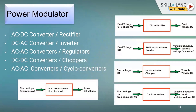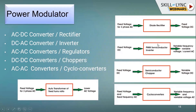The power modulator can be of five different types: AC to DC converter (rectifier), DC to AC converter (inverter), AC to AC converter (regulator), DC to DC converter (chopper), and AC to AC converter (cycloconverter). If a DC motor requires DC supply from an AC source, a controlled or uncontrolled rectifier is used. If a battery is available and an AC motor like an induction motor or PMSM needs to be controlled, an inverter is used.